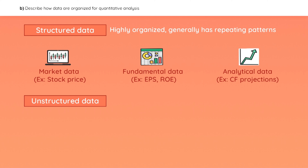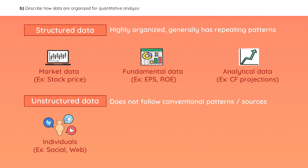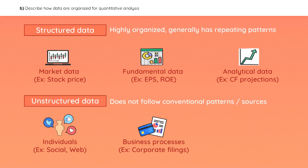Unstructured data, on the other hand, doesn't follow conventional patterns or sources. It could be produced by individuals such as social media or web searches, generated by business processes like credit card transactions or filings, or generated by sensors like satellite images or mobile device tracking. That covers the different types and sources of data in this section.